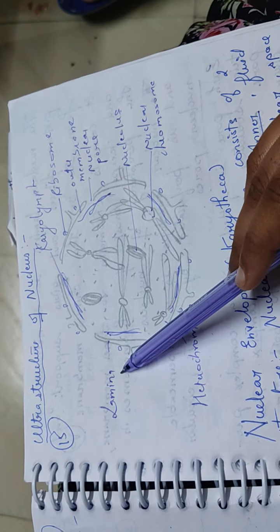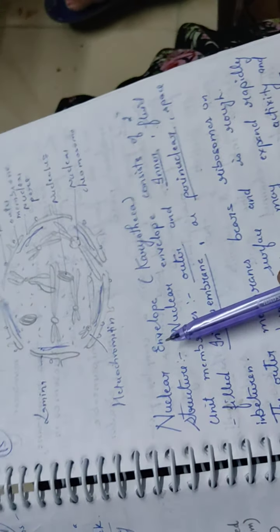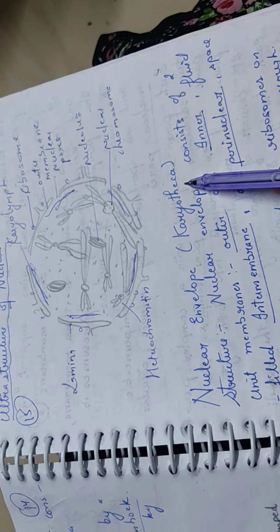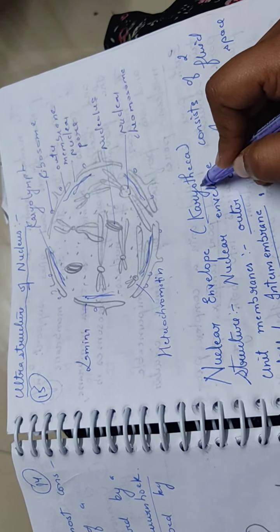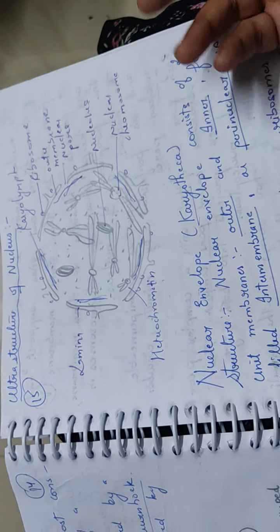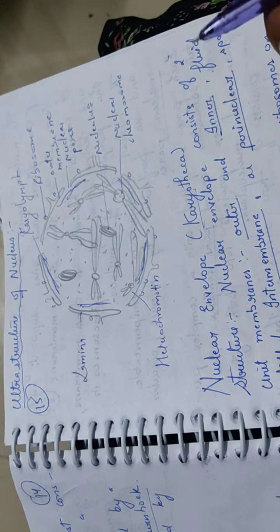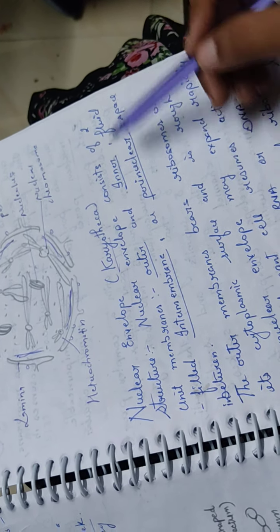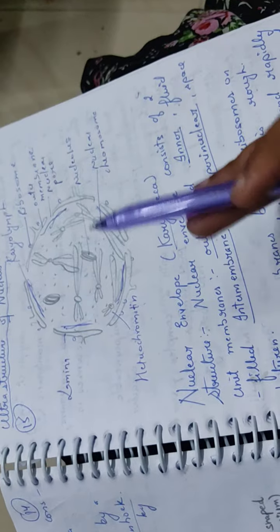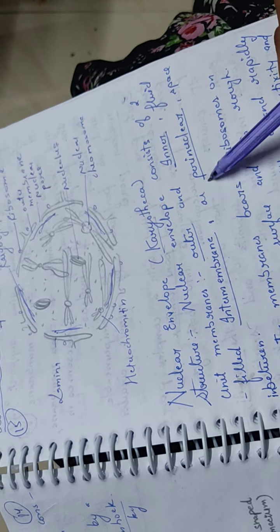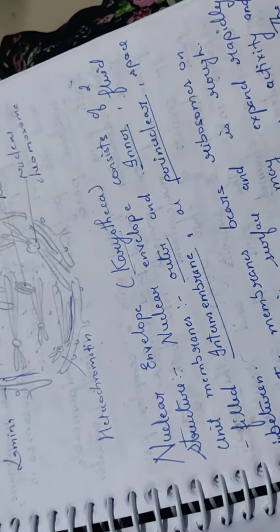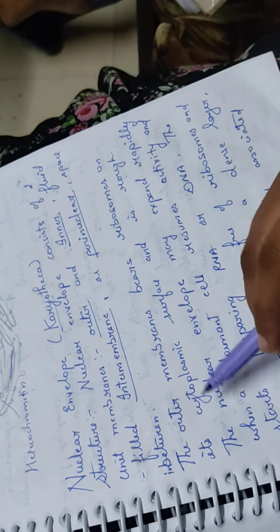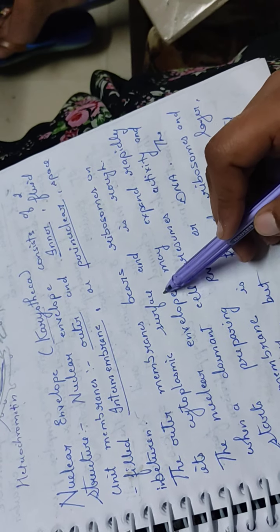This is lamina. Now what is nuclear envelope? Also called karyotheca. Karyo means nucleus, theca means layer. So this nuclear envelope or karyotheca structure consists of two unit membranes, outer and inner. Fluid-filled space in between is the intermembrane or perinuclear space. The outer membrane bears ribosomes on its cytoplasmic surface, so it appears rough.